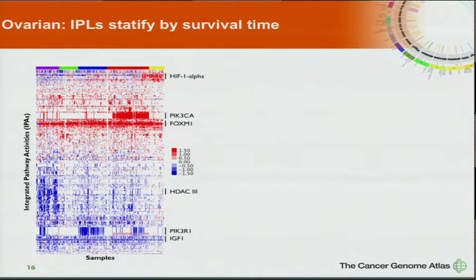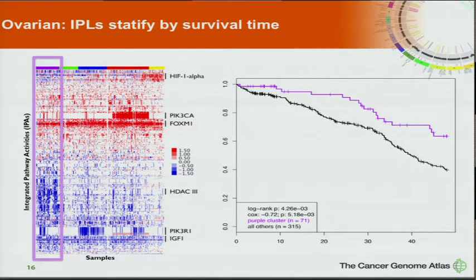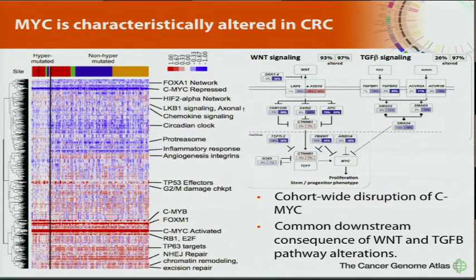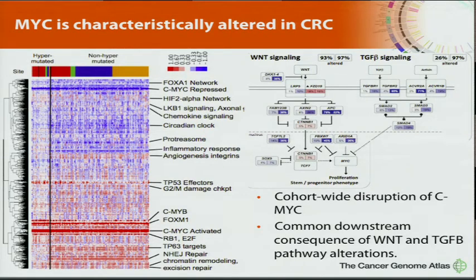If you take the pathway activities and try to define subtypes for the ovarian samples, we could actually start seeing a delineation of meaningful subtypes — this purple cluster shows slightly better survival patterns than the rest of the patients. In the colorectal paper, led by Raju Kucherlapati and David Wheeler, the story isn't so much FOXM1 but activated MYC throughout. Wnt and TGF-beta signaling pathway genes are mutated and all impinge on this misregulation of MYC, which also bears out in the pathway analysis.